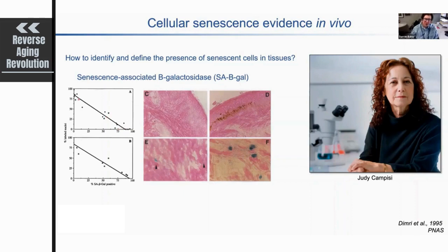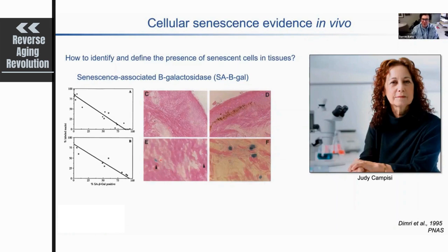When cells are labeled, meaning they're undergoing DNA replication, very few are SA-β-gal positive. But as labeling decreases — indicating reduced cell cycle progression — there is an acceleration in the accumulation of SA-β-gal positive cells. This same assay can be used in vivo, where senescent cells develop a blue colorimetric signal in tissues. Comparing young versus old individual skin, you can see accumulation of these beta-gal positive cells in both the epidermis and dermis.